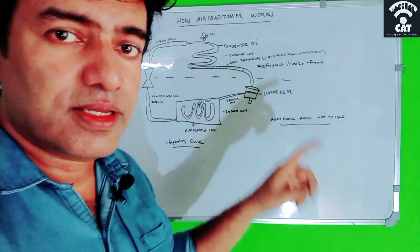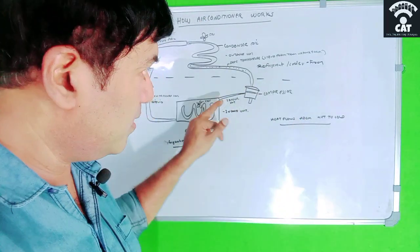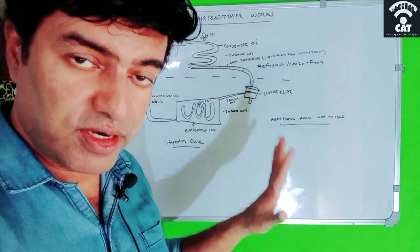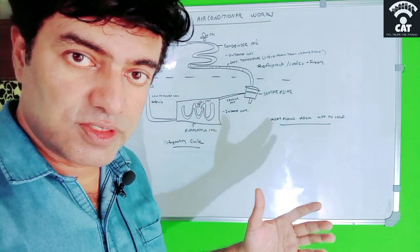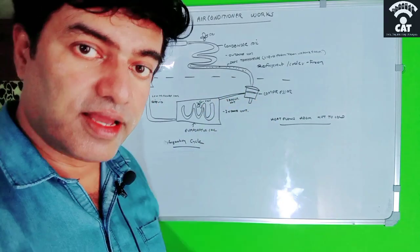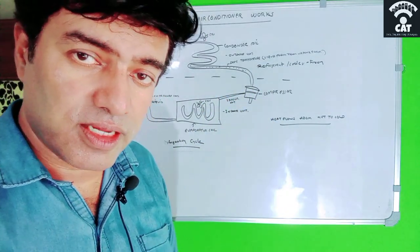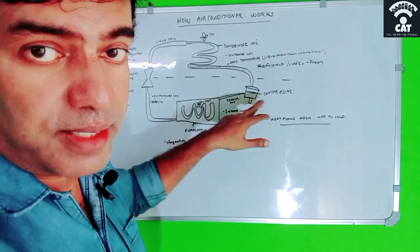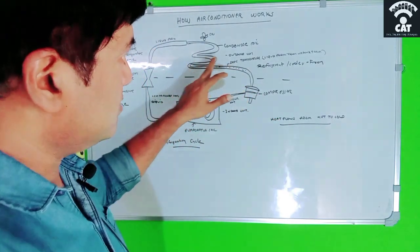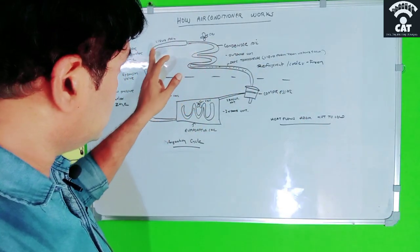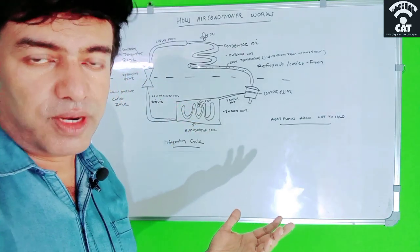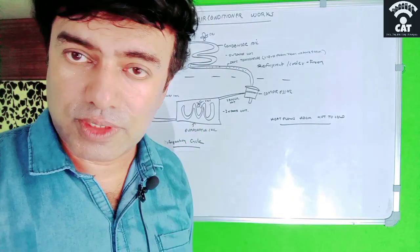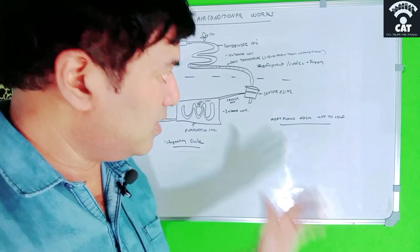As the refrigerant absorbs the room heat, it heats up and exits the evaporator coil, passing again to the compressor. At this point it converts to vapor state — the vapor refrigerant with absorbed heat goes to the compressor. The compressor compresses it again, making it hotter and higher pressure. The same cycle repeats: it goes through the condenser coil, exchanges heat to the outside air, then through the pipe to the expansion valve where temperature and pressure drop again.